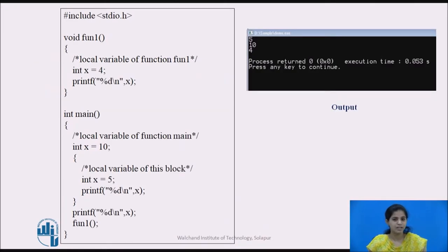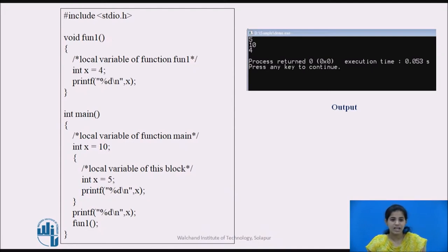Now we see another example. We declare one function fun1 with one integer variable storing the value 4, display it using printf, then close the function. In the main function we create one local variable x of type integer and assign the value 10. Then we open a new curly brace, declare x equal to 5 inside that inner block, display that value, and close the block. After closing the block, we use printf again to display x and then call fun1.